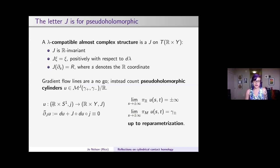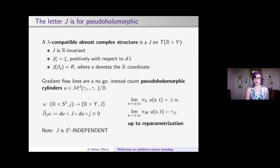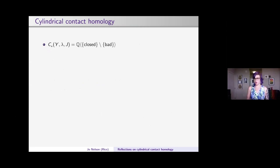As we go to the positive and minus ends of our tube mapped into the symplectization: the positive end goes to +∞ in R × Y and the negative end to −∞. Projecting to Y, we see γ⁺ and γ⁻ up to reparametrization. Because J is S¹-independent we often look at moduli spaces of multiply covered curves, causing transversality and compactness issues. The cylindrical contact homology chain complex is generated by good Reeb orbits — all closed Reeb orbits and their covers, excluding even covers of negative hyperbolic orbits.